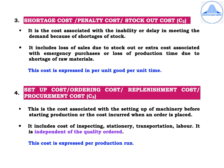Third is the shortage cost, also called the penalty cost or stock out cost, denoted by C2. It is a cost associated with the inability or delay in meeting demand because of shortages of stock. It includes loss of sales due to stock out, extra cost associated with emergency purchases, or loss of production time due to shortage of raw materials. This cost is expressed in per unit good per unit time.